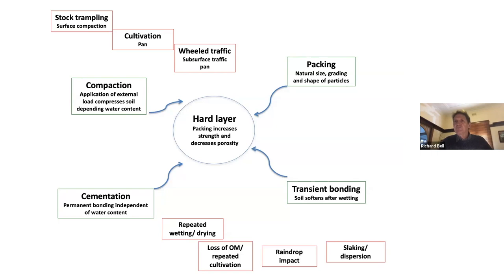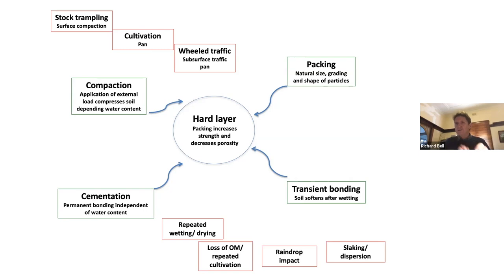Soils in the WA wheat belt can be rock hard in summer when dry, then soften as soon as they wet up. There's also cementation — where sand, silt, and clay are more permanently bonded through compounds like iron oxides, aluminium oxides, and silica. This might be expressed in a silcrete pan, which you often find in duplex soils just at the top of the B horizon — quite a hard layer from silcrete bonding the clay particles. That type of permanent bonding remains regardless of whether the soil is wet or dry. So those are natural features.